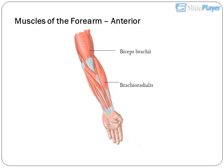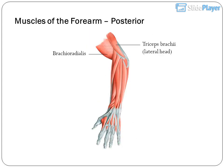Muscles of the forearm — anterior: biceps brachii, brachioradialis. Posterior: triceps brachii lateral head, brachioradialis.